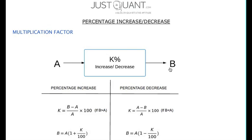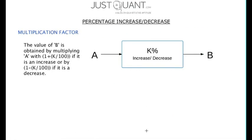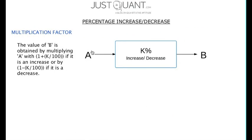Now, the final quantity B is obtained when A is multiplied by 1 plus k by 100, in the case of percentage increase, whereas in the case of percentage decrease, it is obtained by multiplying A with 1 minus k by 100. The quantity with which A is multiplied, that is, 1 plus or minus k by 100, is called the multiplication factor.